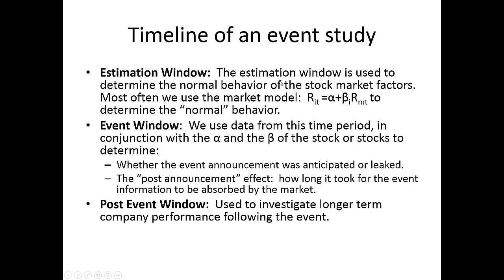The estimation window is used to determine the normal behavior of the stock market factors. Most often we use the market model, which incorporates the market return. The firm's return for each day in the estimation period equals an intercept plus a beta — the regression coefficient describing the relationship between the firm's returns and the market's returns. In the event window, we use that data along with the estimated intercept and beta to determine whether the event announcement was anticipated or leaked and the post-announcement effect. The post-event window is used to investigate longer-term company performance following the event.